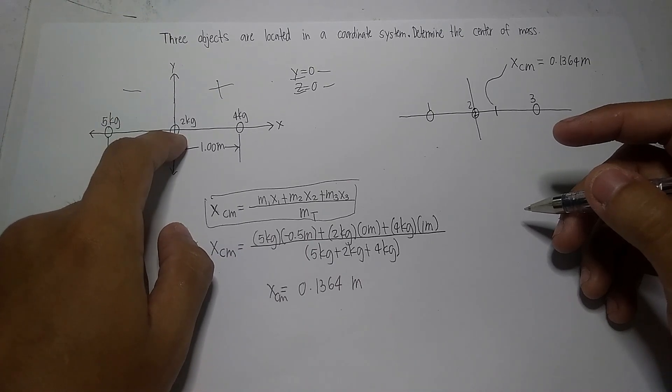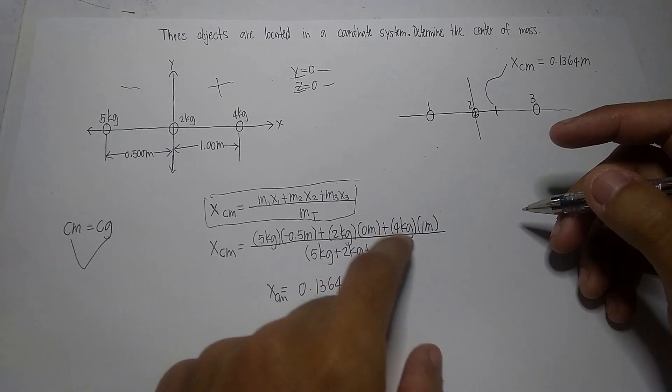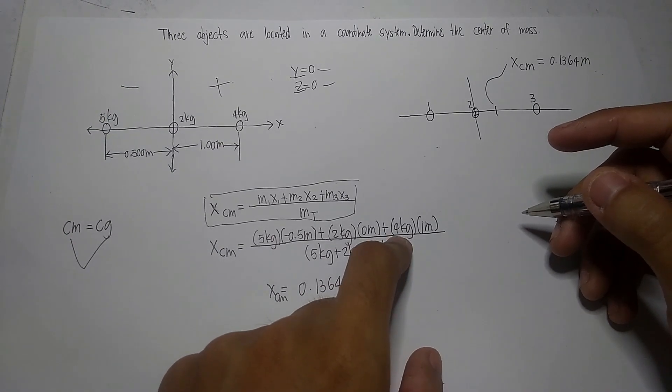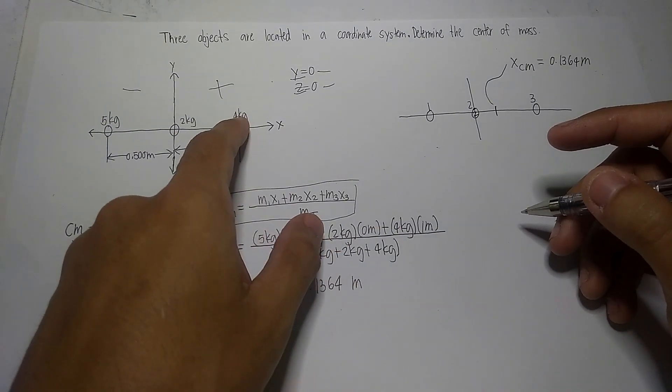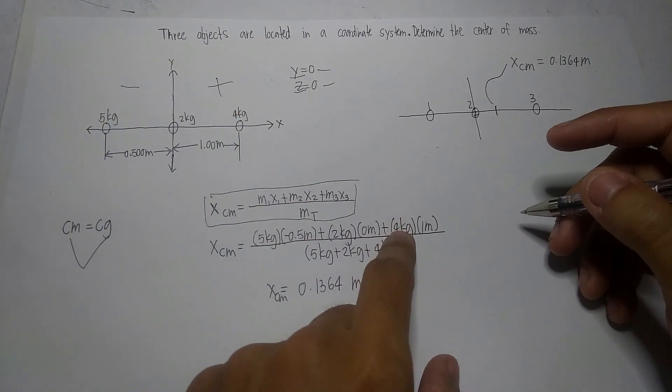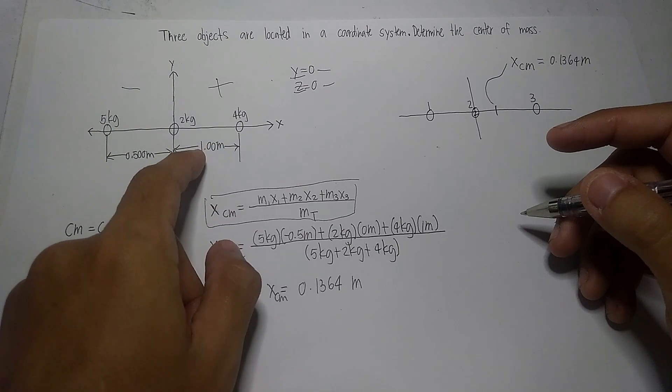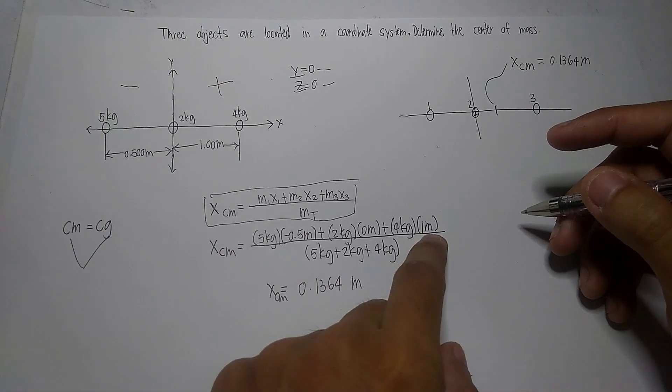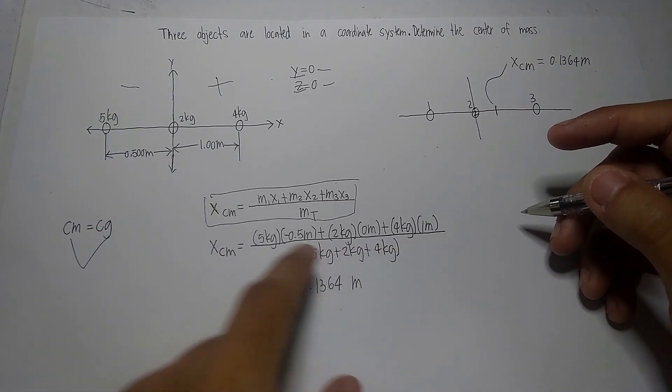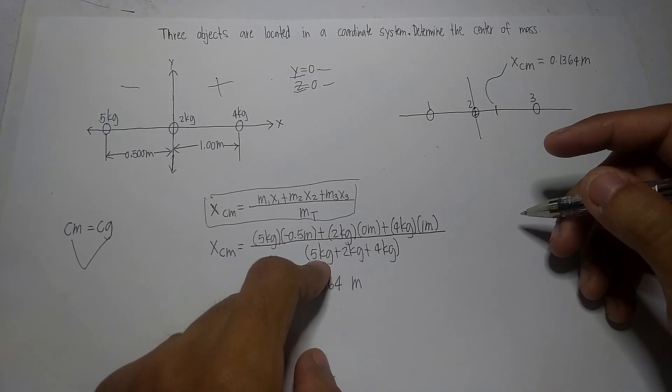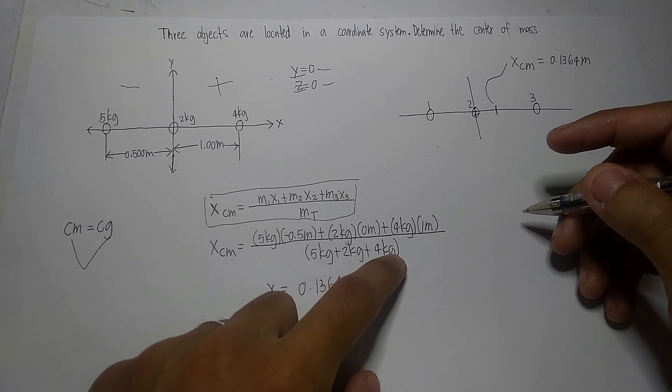Therefore, this is the origin of our reference point which has a value of 0. Then, we will also substitute 4 kg in place of mass 3, and we know that there is a 1 meter distance. For the total mass, we will just put the value of the masses of the 3 objects and sum it up.